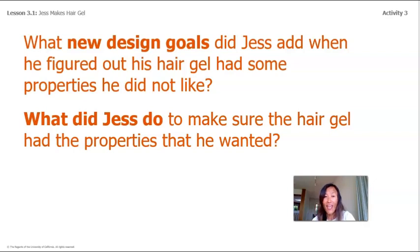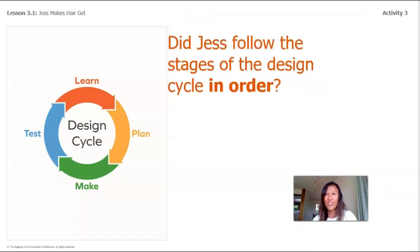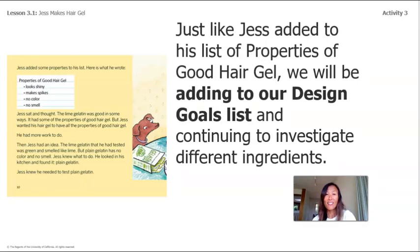What did Jess do to make sure the hair gel had the properties he wanted? He learned about his ingredients, made a plan, made his hair gel, and tested it. If ingredients didn't work out he went back and thought about others. Like engineers in the design cycle, Jess followed the stages — but when he tested lime gelatin he realized his properties list was incomplete, so he went back to the 'learn' stage. Engineers often have to revise their plans. Just like Jess, we will be adding to our design goals list and continuing to investigate different ingredients.